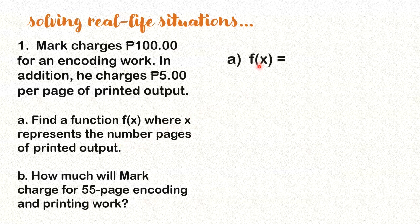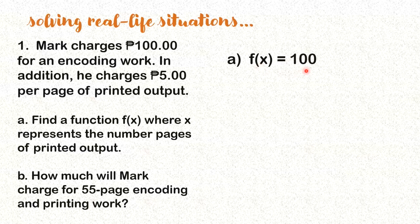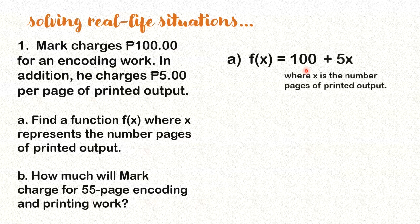So what does our f(x) look like? First, there's a fixed charge of 100 pesos for encoding. Now, if you print, 5 pesos per page, so there's an additional fee. We have plus 5x, where x is the number of pages of printed output. So that's what our f(x) looks like.